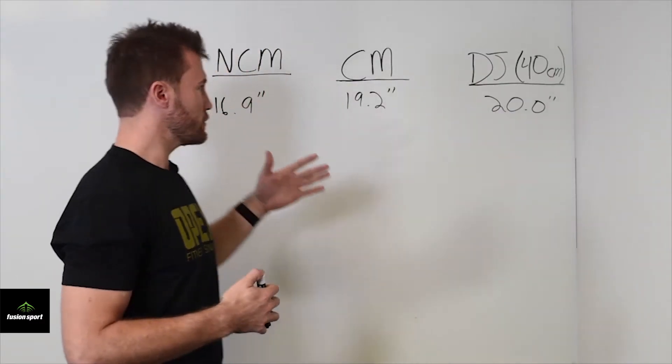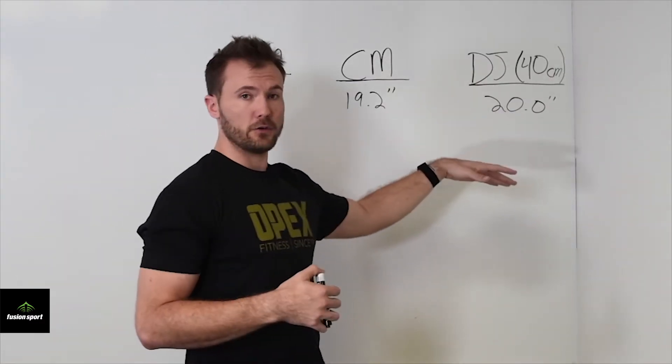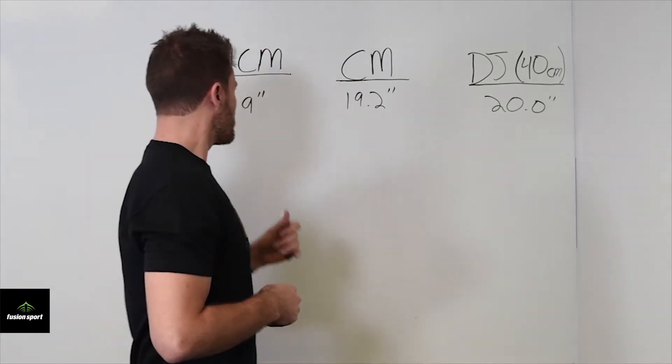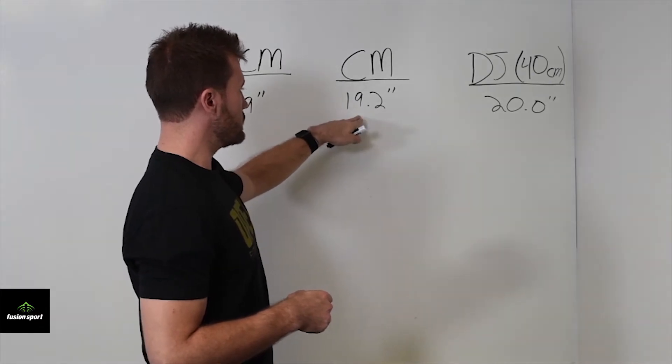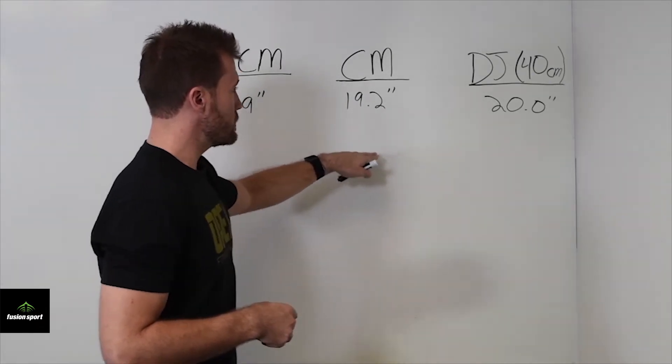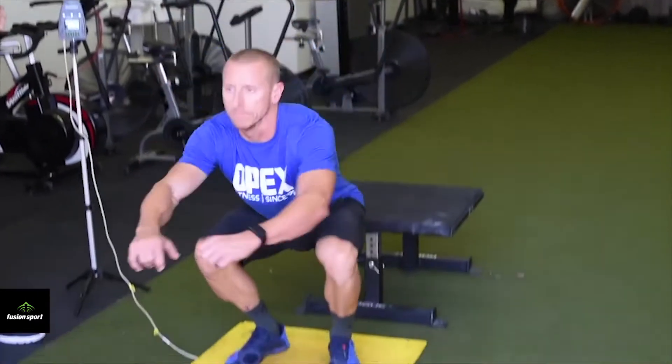What we look for is we're just looking to see what these numbers are using the smart jump technology. So for his non-counter movement jump, 16.9 inches. For his counter movement, 19.2 inches. And his depth jump was 20.0 inches.